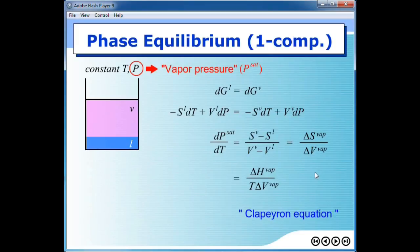This is called Clausius-Clapeyron equation. This is one of the important equation for the calculation of vapor pressure.